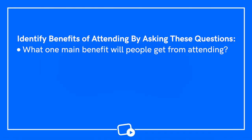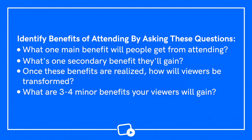Identify the biggest benefits of attending your pay-per-view live event by asking yourself these questions: What one main benefit will people get from attending? What's the secondary benefit they'll gain? Once these benefits are realized, how will viewers be transformed? What are three to four minor benefits your viewers will gain? These answers will help you know what to communicate to promote your event. Share these benefits with your audience. If you get stuck, don't be afraid to ask others for help or go back and dig deeper into steps one and two.